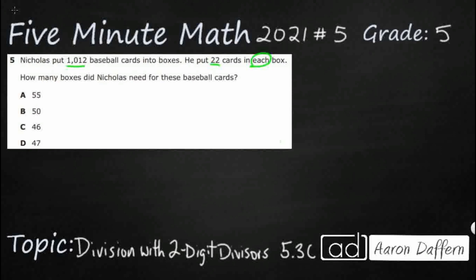Well, even if I didn't know which operation to use, take a look at my four answer choices. They are all very small, which means it's probably going to be division. But let's just draw a strip diagram to make sure so my total is always up on top. I've got 1,012 baseball cards.